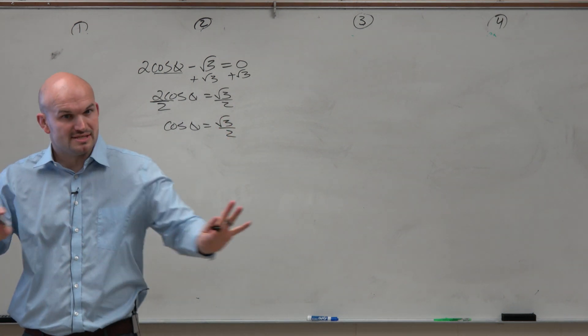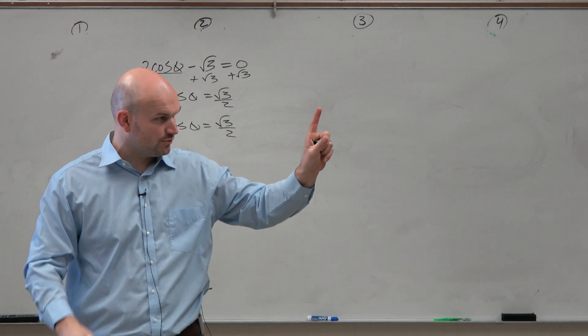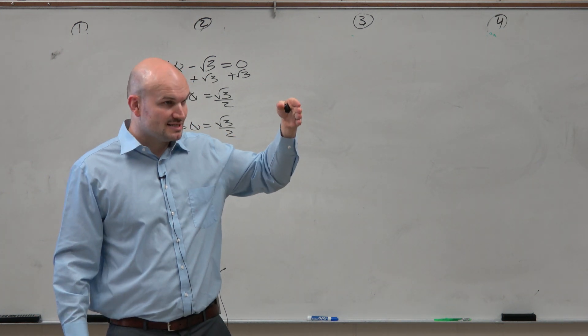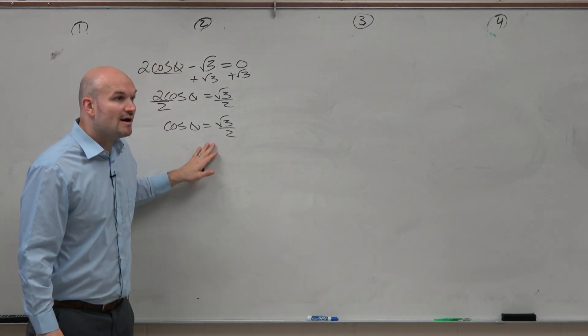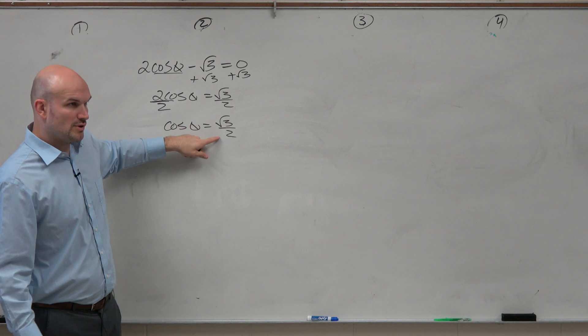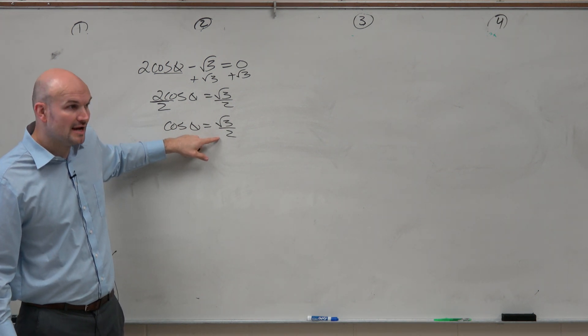Now, we don't want to use the inverse function because that's going to restrict it to one answer. We recognize, as we looked at the graph, that cosine of theta equals square root of 3 over 2 infinitely many times.